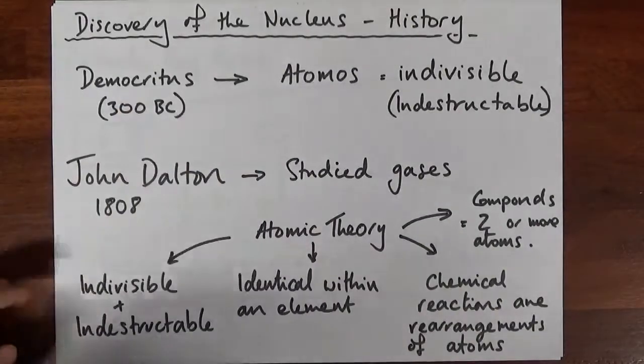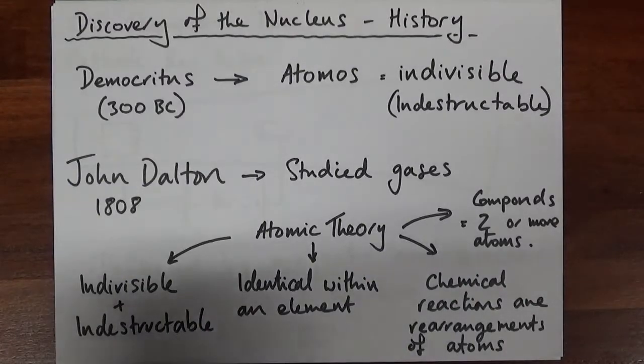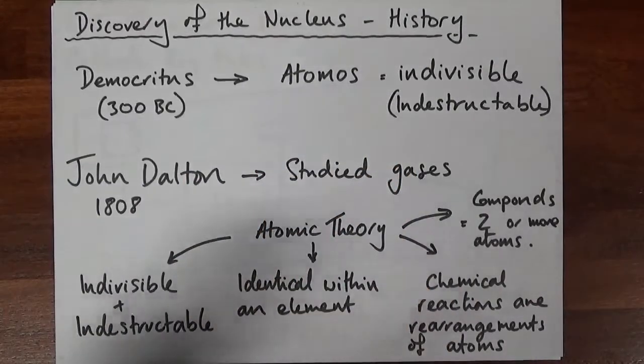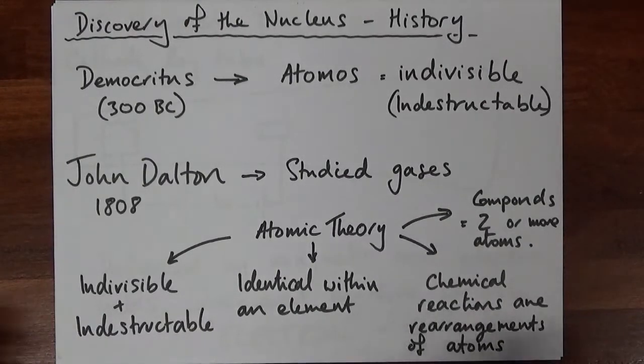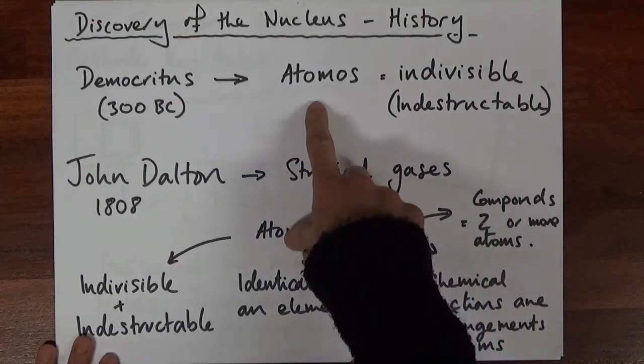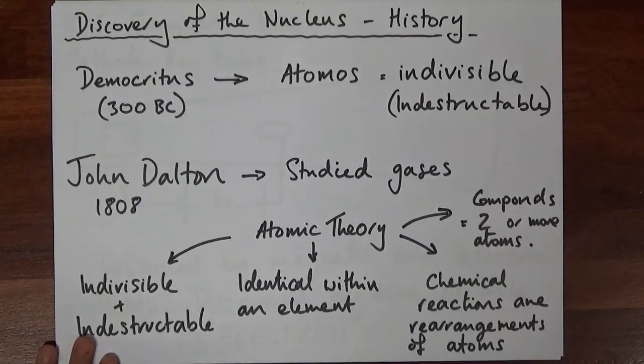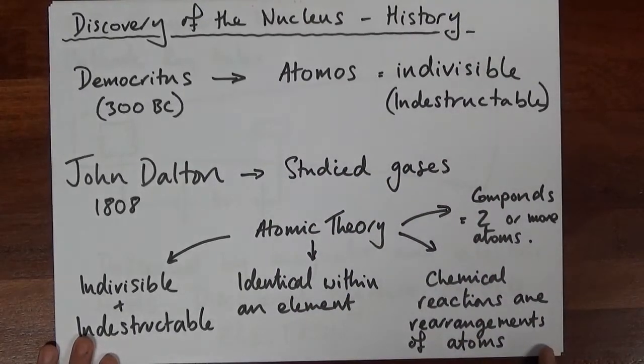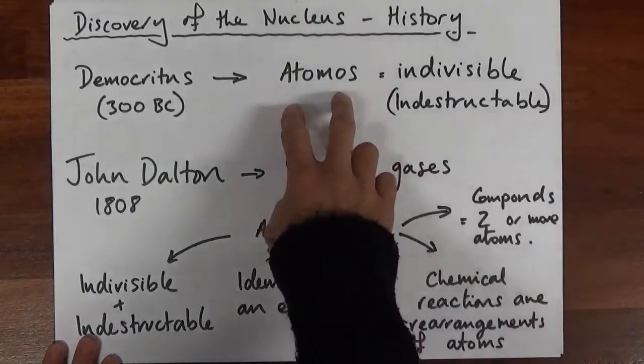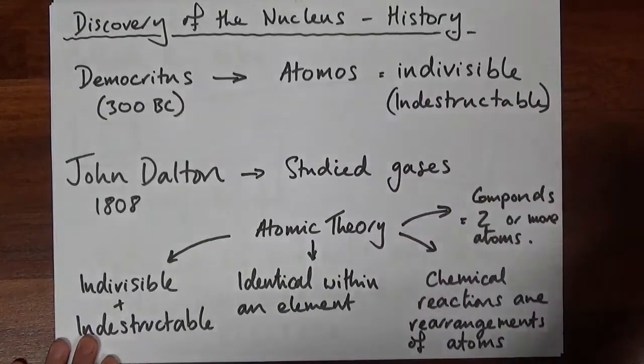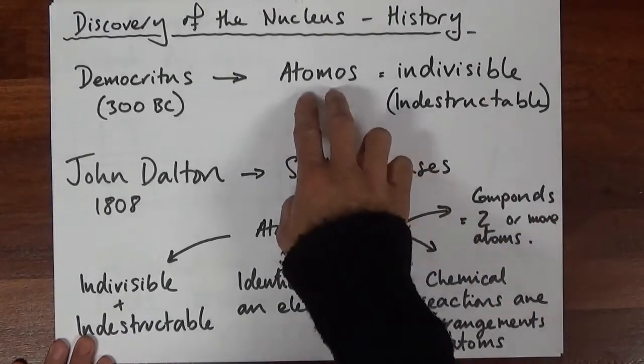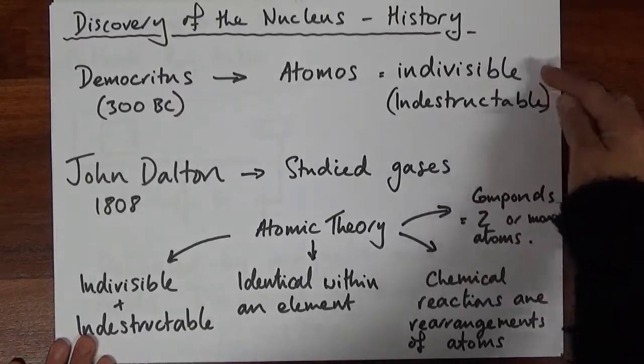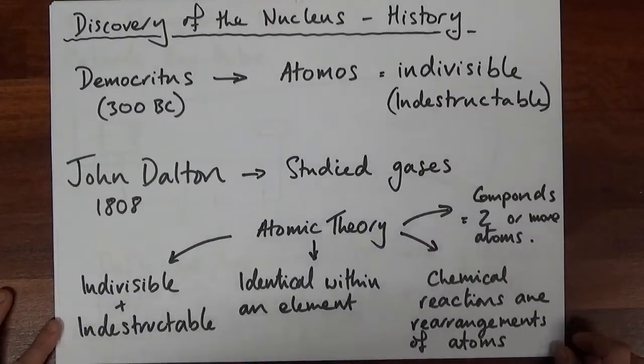In 300 BC, Democritus got a bunch of clay and just basically chopped it in half, chopped it in half, and speculated if I keep doing this, can I do this forever or will there be a point where I can no longer do it? He came up with the idea that there must be a point where things get so small they can't be chopped up anymore, and he decided to call these tiny particles atomos, which basically means indivisible. He postulated that atoms are fundamental particles which are both indivisible and indestructible, and that idea basically stood for thousands of years.